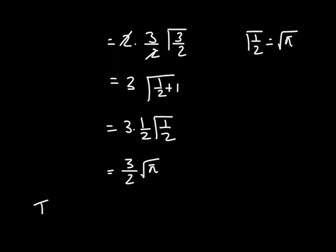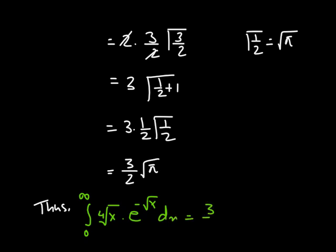Thus, the value of the integral from 0 to infinity of the fourth root of x times e raised to the power of minus square root of x dx is 3/2 times square root of pi.